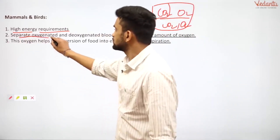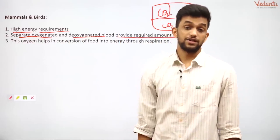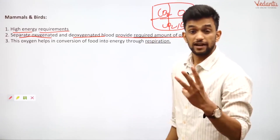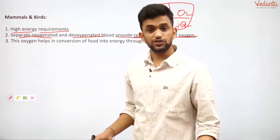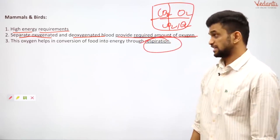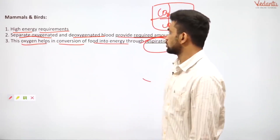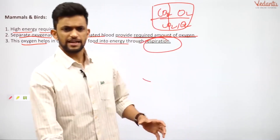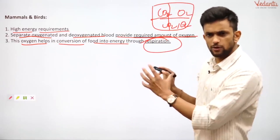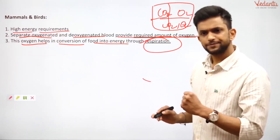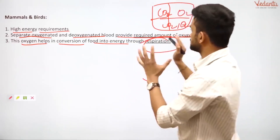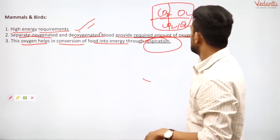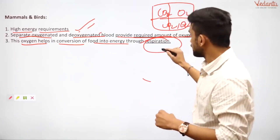Keeping oxygenated and deoxygenated blood separate provides the required amount of energy due to high energy and high oxygen requirements. Oxygen helps in the conversion of food into energy through respiration. That is why mammals and birds have a four-chambered heart — so they can use more oxygen and produce more energy through respiration.